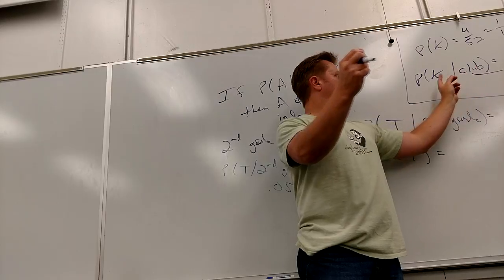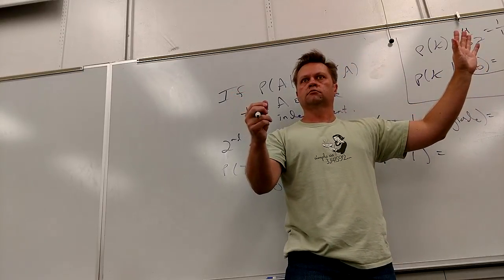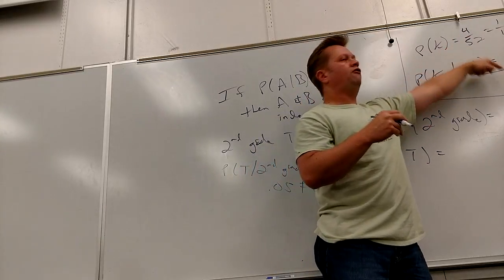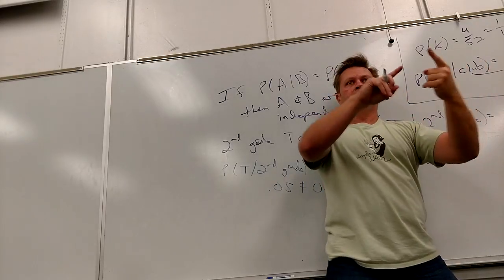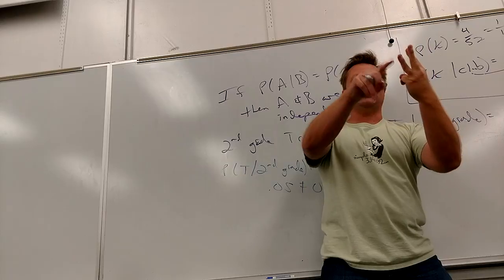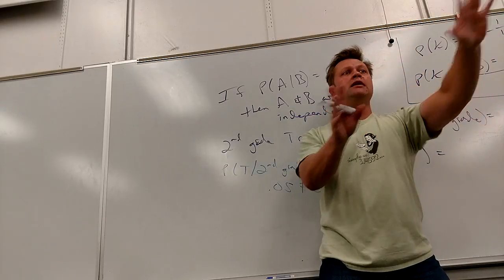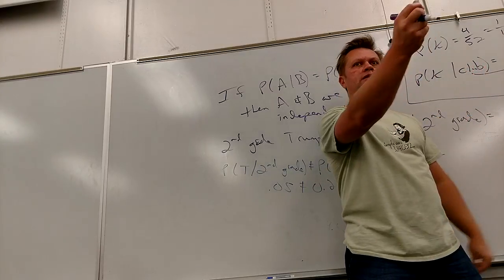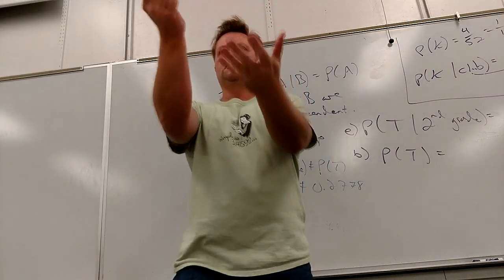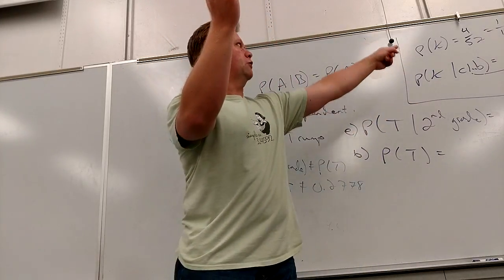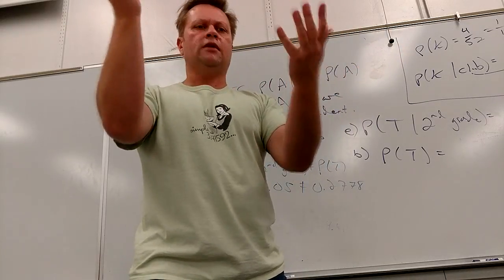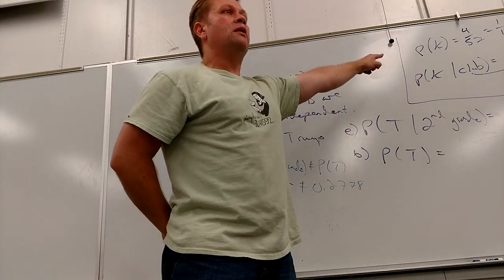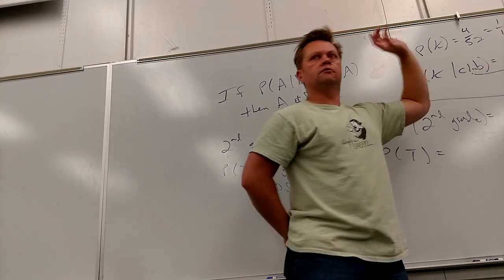If I tell you it's a club I'm holding, does it change the probability it's a king? No — they're independent, because knowing it's a club, it's still the same probability that it's a king. Why does that make sense? I threw out three-fourths of the deck — it can't be a spade, heart, or diamond — but I also threw out three of the four kings. The ratio stayed the same. Knowing it's a club does not change the probability it's a king.